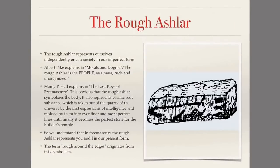Let's take a look at the rough Ashlar first. The rough Ashlar represents ourselves independently or as a society in our imperfect form or our present form. Albert Pike explains in Morals and Dogma that the rough Ashlar is the people as a mass, rude and unorganized.